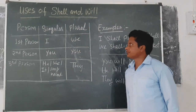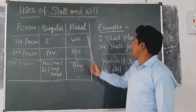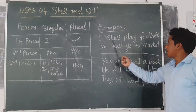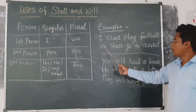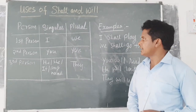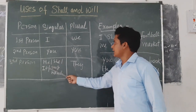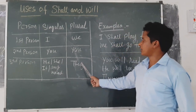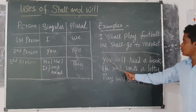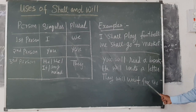Look at this type. According to grammar rule, if subject is in first person — I and we — shall is used. Here are examples: I shall play football, we shall go to market. If subject is in second person — you — and third person — he, she, any name, or they — will is used. Examples are: you will read a book, he will write a letter, they will wait for it.